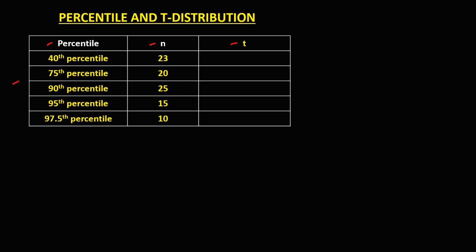To find the t-value of this 48th percentile, we use this method: 100 minus 40 equals 60. Then we need to convert this 60 to decimal, so that's 0.60. This is the area to the right of this 48th percentile.